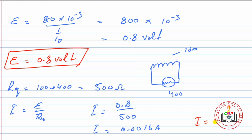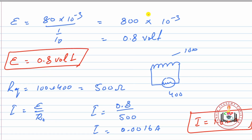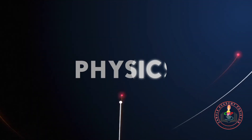Current = 1.6 milliamperes۔ تو galvanometer کی سوئی 1.6 milliamperes current دکھائے گی۔ اگلی video تک کے لئے خداحافظ، اللہ حافظ۔